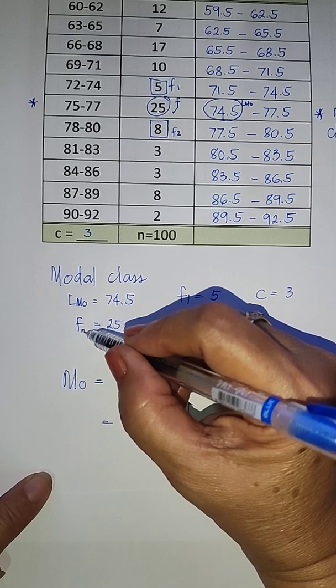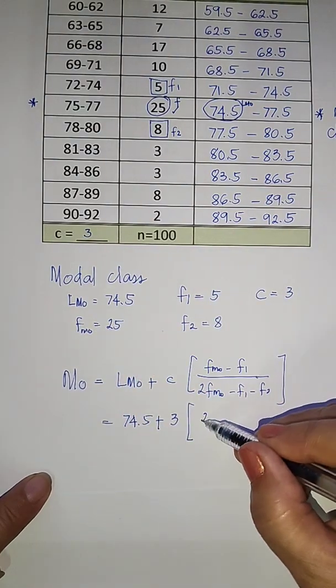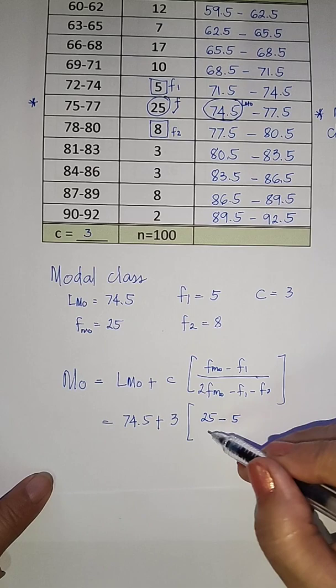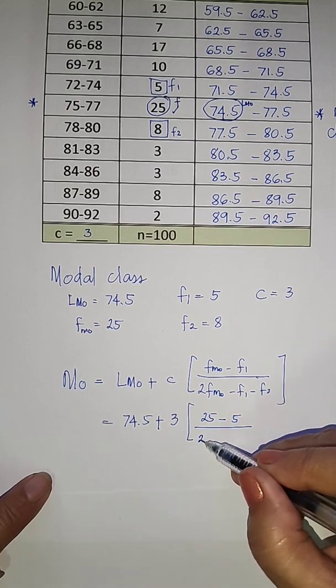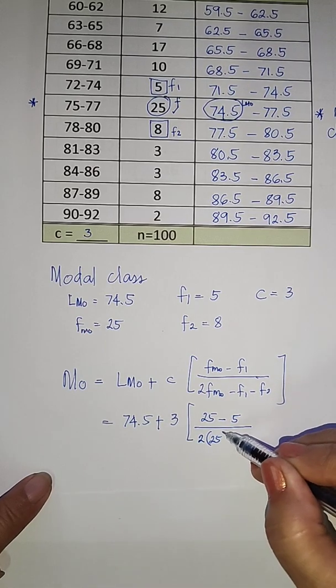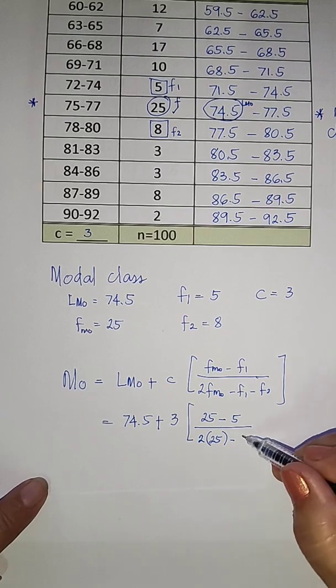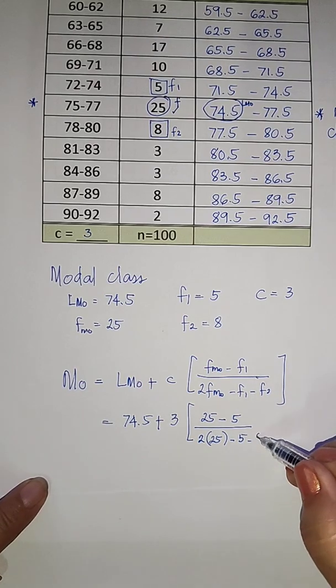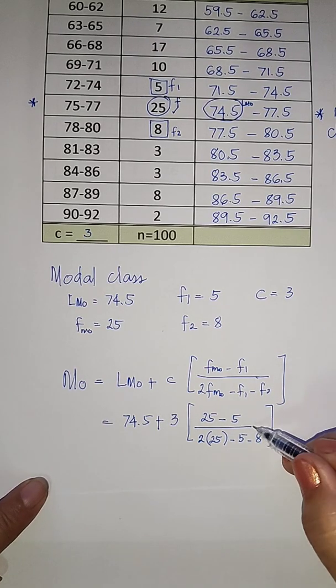We have our FMO, the frequency of the modal class is 25 minus our F1 is 5. So here we have 2 times 25 minus our F1 of 5, and then F2 of 8.